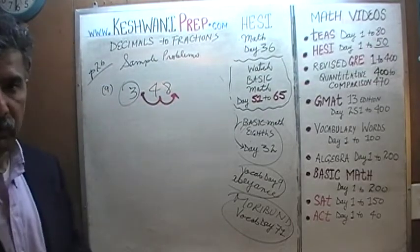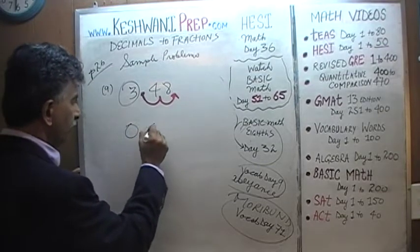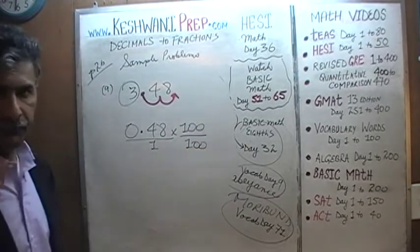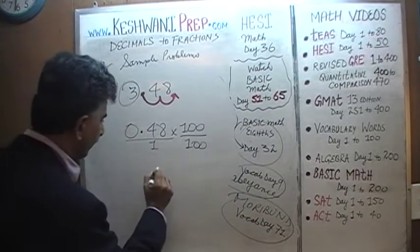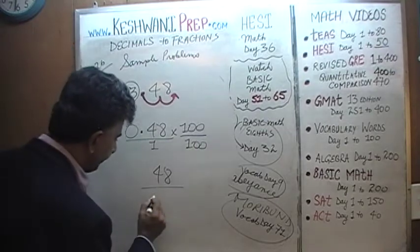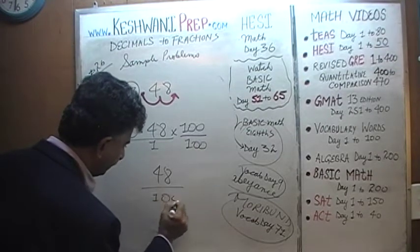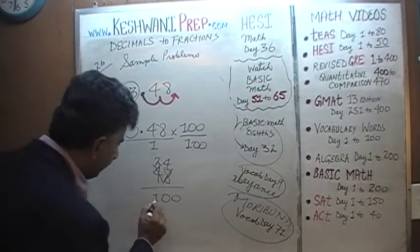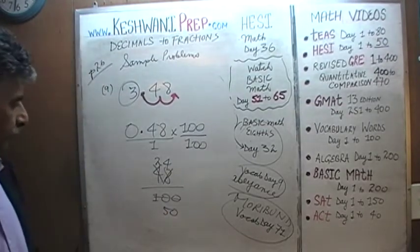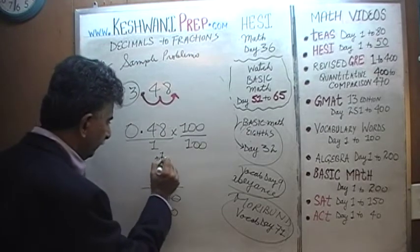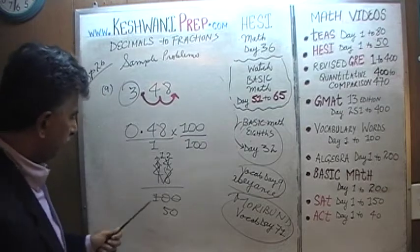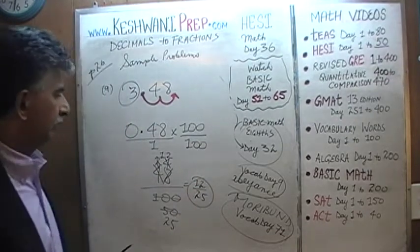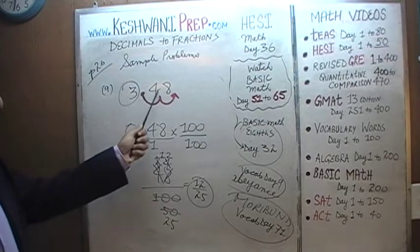We need to move the decimal two spots to make 0.48 a whole number. So we multiply top and bottom by 100. 0.48 times 100 is just 48, and 1 times 100 is just 100. Now let's divide top and bottom by 2: 48 divided by 2 is 24, 100 divided by 2 is 50. Divide top and bottom by 2 again: 24 divided by 2 is 12, 50 divided by 2 is 25. So 0.48 is 12 over 25.